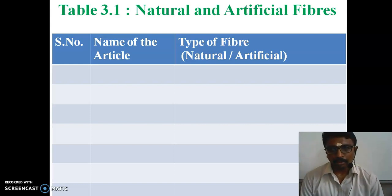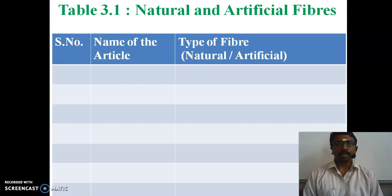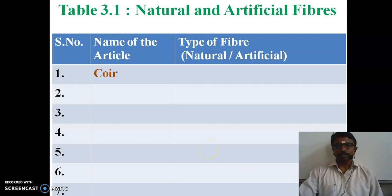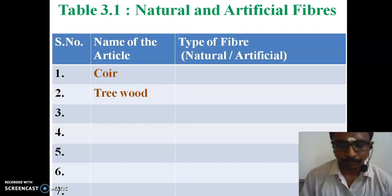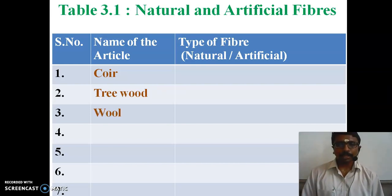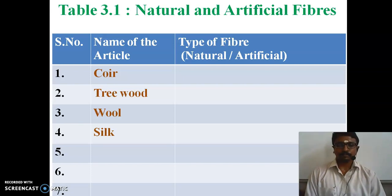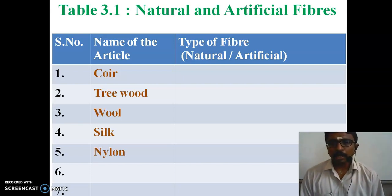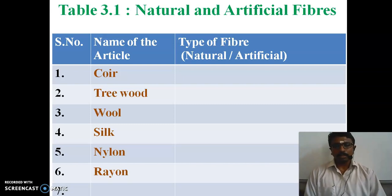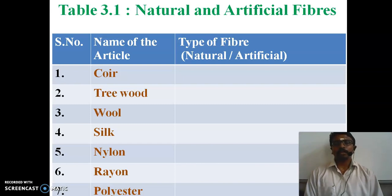The table has columns for serial number, name of the article, and type of fiber — natural or artificial. The articles to fill in are: (1) coir, (2) tree wood, (3) wool, (4) silk, (5) nylon, (6) rayon, and (7) polyester.